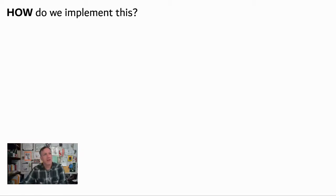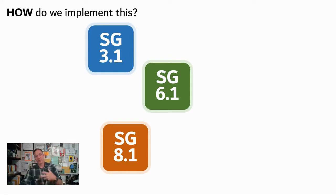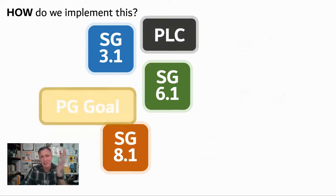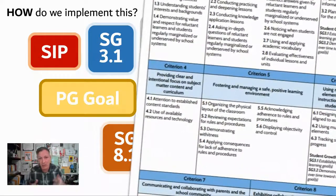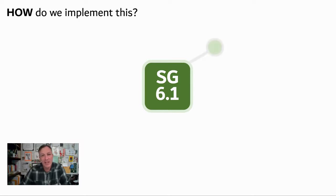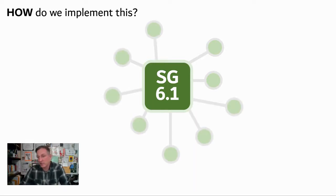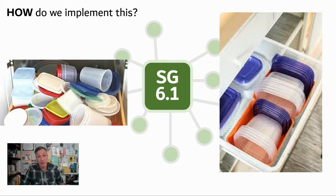How do we implement this? As a classroom teacher, I've got whole class goals, small group goals, collaboration goals, plus PLC responsibilities, professional growth goals, universal design, school improvement plan, equity initiatives — it can be obviously overwhelming. The idea of forging connections is key: how can I connect my student growth goal to my small group goal and collaboration goal? The Tupperware drawer analogy applies here — we've got all these potentially disconnected things, but if we can find a way to nest things together and make it more efficient, it'll be much more manageable and make much more sense.